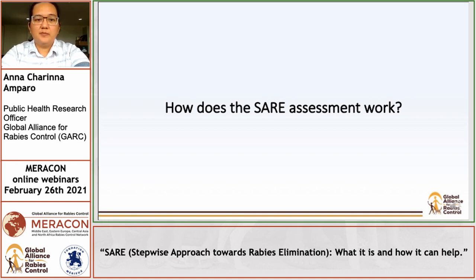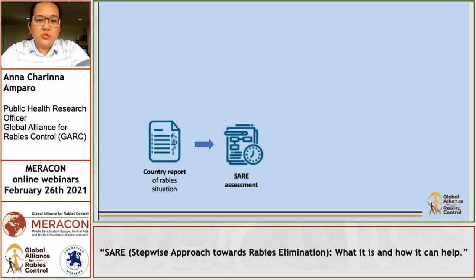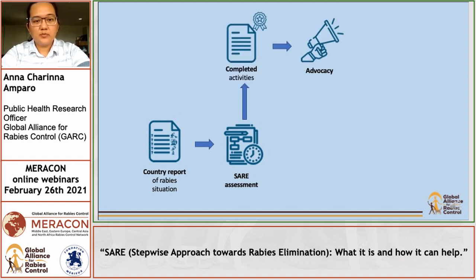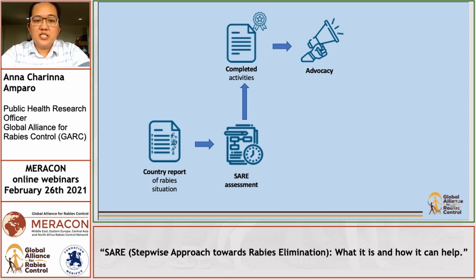So how does it work? Initially you would be asked to complete a country report. The country report will include details of rabies-related activities and status from different sectors of the government. This report will help you answer the SARA assessment more efficiently. There are three major outputs of the SARA assessment. The first is a list of completed or accomplished activities, which can be used for both advocacy and lobbying for acquisition of funding required to ensure progress towards rabies elimination.